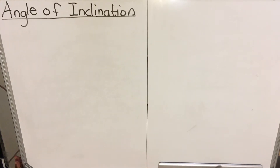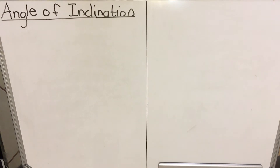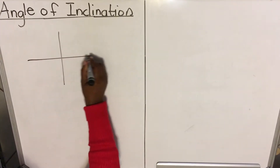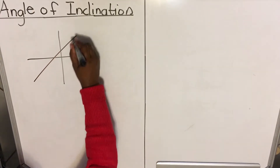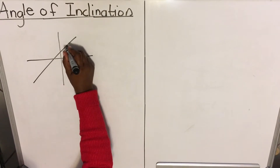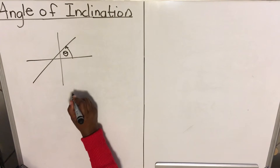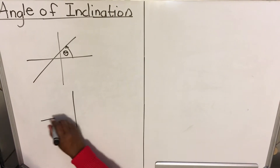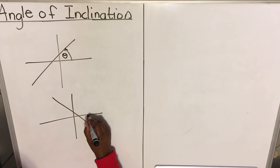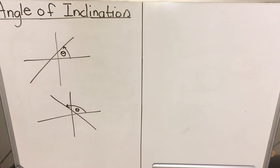Hello everyone, this is a lesson on angle of inclination. Let me show you which angle we are talking about. You have a Cartesian plane, and you have a straight line going like that. The angle from the x-axis to the line — that's the angle of inclination. You can have it like this also: if you have a line like that, from the x-axis to the line, that's the angle of inclination.